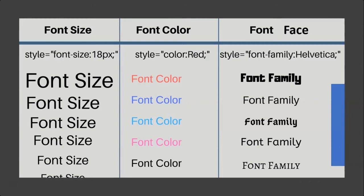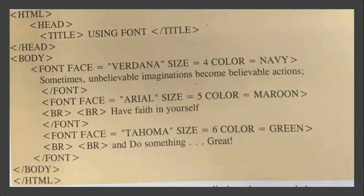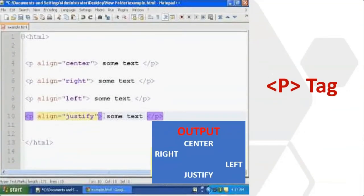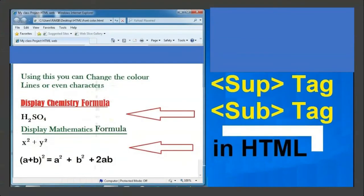The P tag (paragraph tag) is used to break the text into paragraphs. The P tag is placed at the beginning of each new paragraph and the browser separates the text accordingly. The end tag </p> is optional. Paragraph alignment is also possible in HTML: p align left aligns a paragraph to the left, p align right aligns to the right, p align center aligns to the center, and p align justify justifies the text across the page.